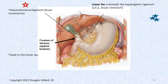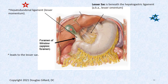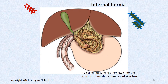Remember the lesser sac lives behind the lesser omentum. Here's the hepatoduodenal ligament and the hepatogastric ligament — these two together make up the lesser omentum. There's a little tunnel right here called the foramen of Winslow where you can stick your fingers in. Surgeons have to stick their fingers in there and grab the neck of the gallbladder to tie off the cystic artery. If you can get your fingers in there, intestines can get up in there — and that's called an internal hernia.